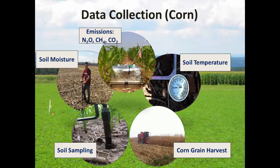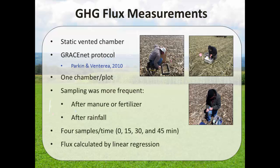We collected data for greenhouse gas emissions with 32 rounds of sampling. At each round, we monitored soil moisture and soil temperature. We had four soil sampling times: at baseline before the start of the experiment, at planting, at side-dressing, and at harvest. The sampling depth was 0 to 20 centimeters and 0 to 30 centimeters, except at planting which only had 0 to 20 centimeters. We harvested corn grain. For greenhouse gas measurements, we used static flux chambers following the GraceNet Protocol. We had one chamber per plot and sampled more frequently when we applied manure or fertilizer and after rainfall events.